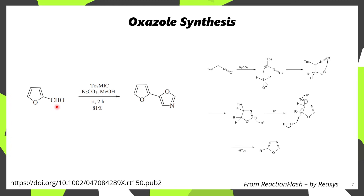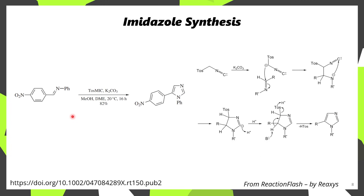If an aldehyde is used, typically you'll observe formation of an oxazole. The mechanism is similar; however, instead of ring opening of the dihydrooxazole, the base eliminates the tosyl group on its own, affording an oxazole. It's also possible to apply this to imines to get substituted imidazoles. Here's an example where an N-phenyl imidazole was synthesized—the mechanism is quite similar, except instead of a carbonyl we have an imine.